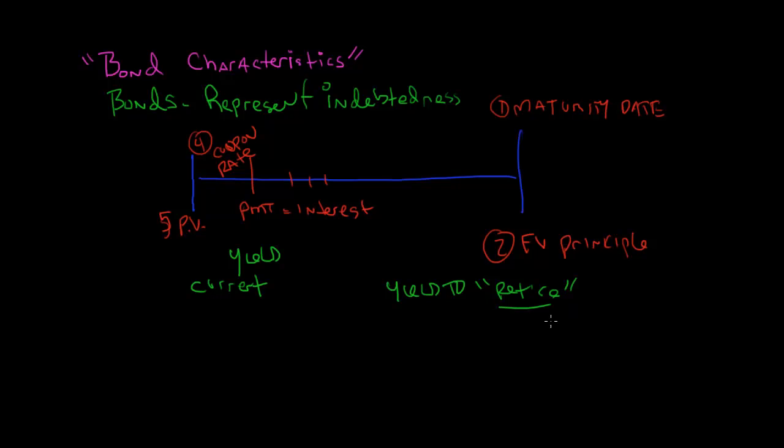It could be retired either at the maturity date, which we'll call yield to maturity, or it could be called early, which is yield to call. Also, do not confuse the current yield for the coupon rate—they are different. The coupon rate is fixed.